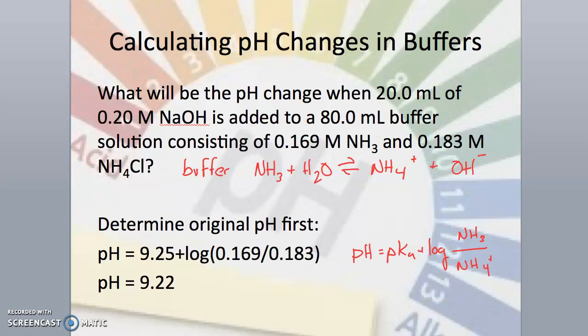When asked to find the pH change, we'll need to find a final pH and an initial pH. Let's start with the initial pH before any sodium hydroxide is added. Using the Henderson-Hasselbalch equation and the pKa for the ammonium ion, NH4+, we determine the pH of the buffer system is 9.22 prior to adding the strong base.